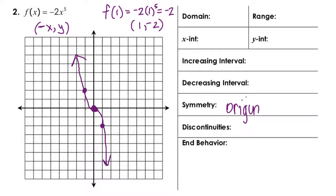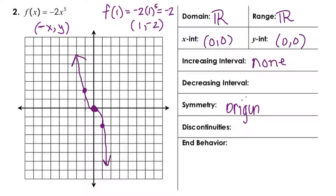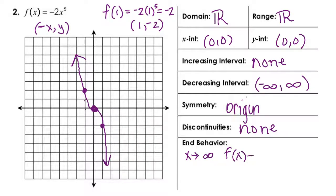For −2x^5: domain and range are both all real numbers. The x- and y-intercepts are both at (0, 0). This function is not increasing anywhere; it is decreasing for all real numbers. It is symmetric about the origin with no discontinuities. End behavior: as x approaches positive infinity, f(x) approaches negative infinity; as x approaches negative infinity, f(x) approaches negative infinity.